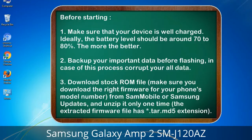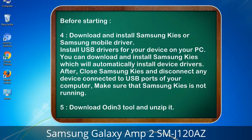Make sure you download the right firmware for your phone's model number from Sammobile or Samsung Updates, and unzip it only one time. The extracted firmware file has a *.tar.md5 extension. 4. Download and install Samsung Kies or Samsung mobile driver. Install USB drivers for your device on your PC — Samsung Kies will automatically install device drivers. After, close Samsung Kies and disconnect any device connected to USB ports of your computer, making sure Samsung Kies is not running. 5. Download Odin 3 tool and unzip it.